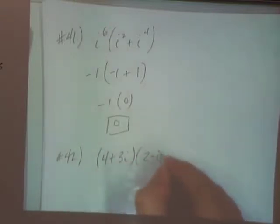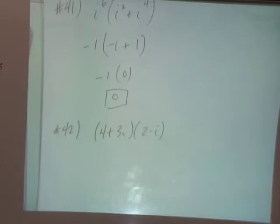All right, 42. Four plus three I. Two minus I. We've got to foil this.